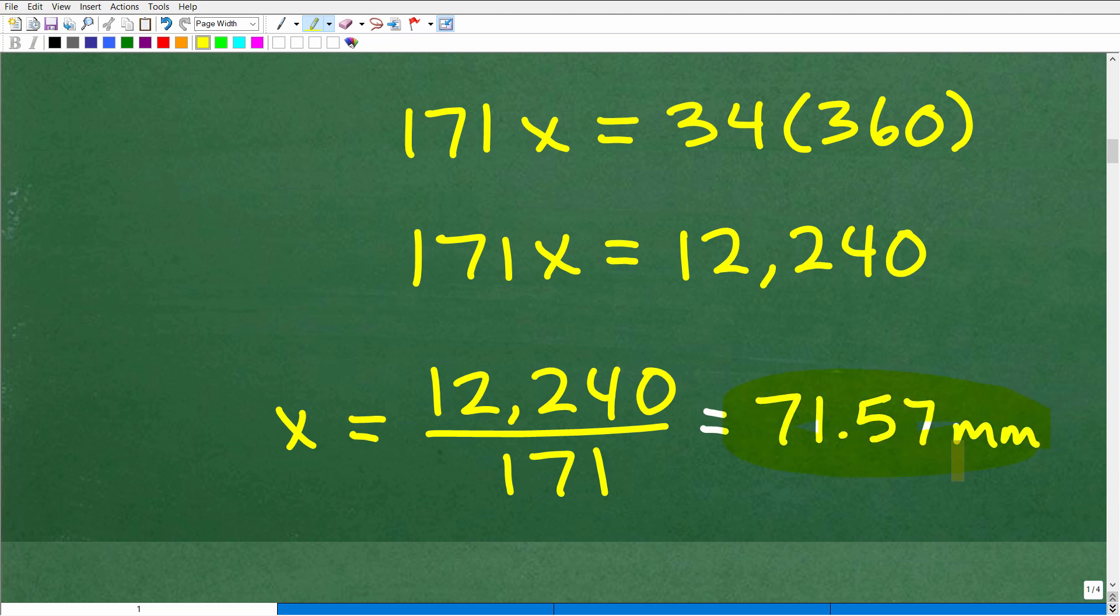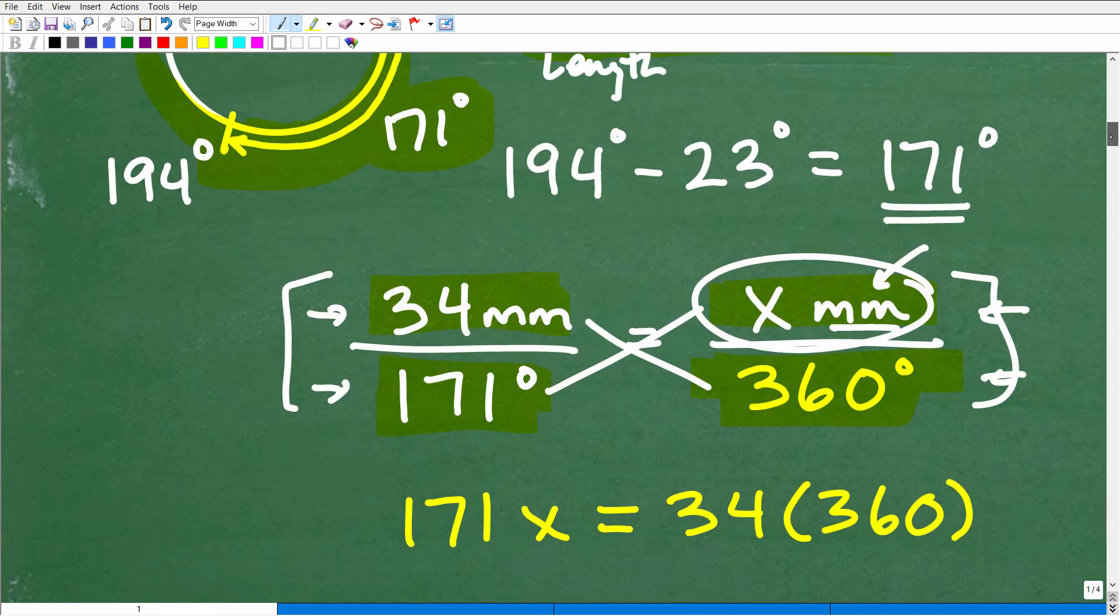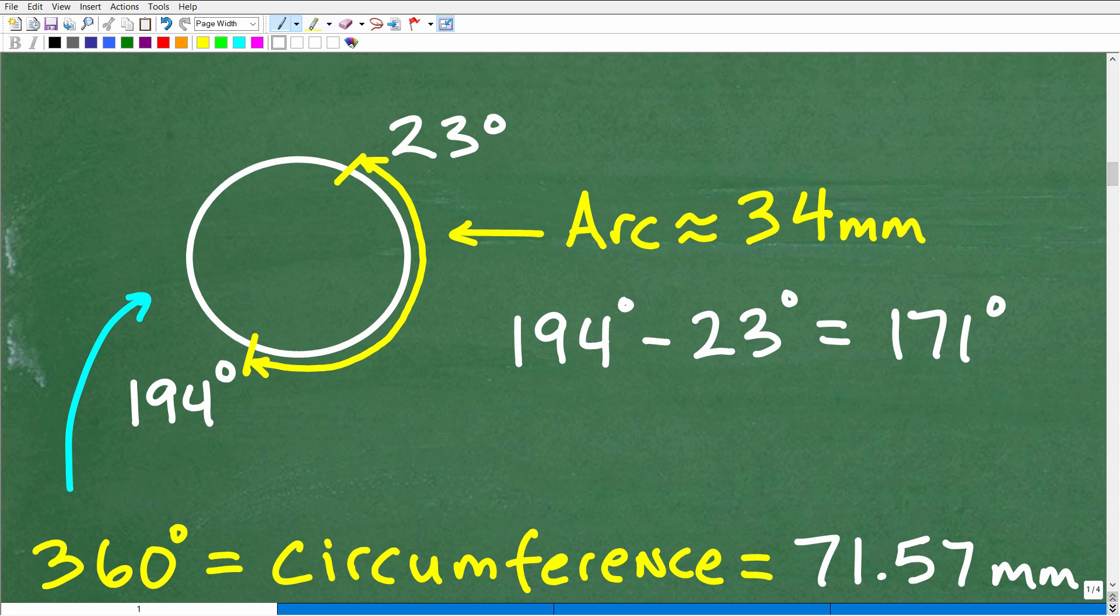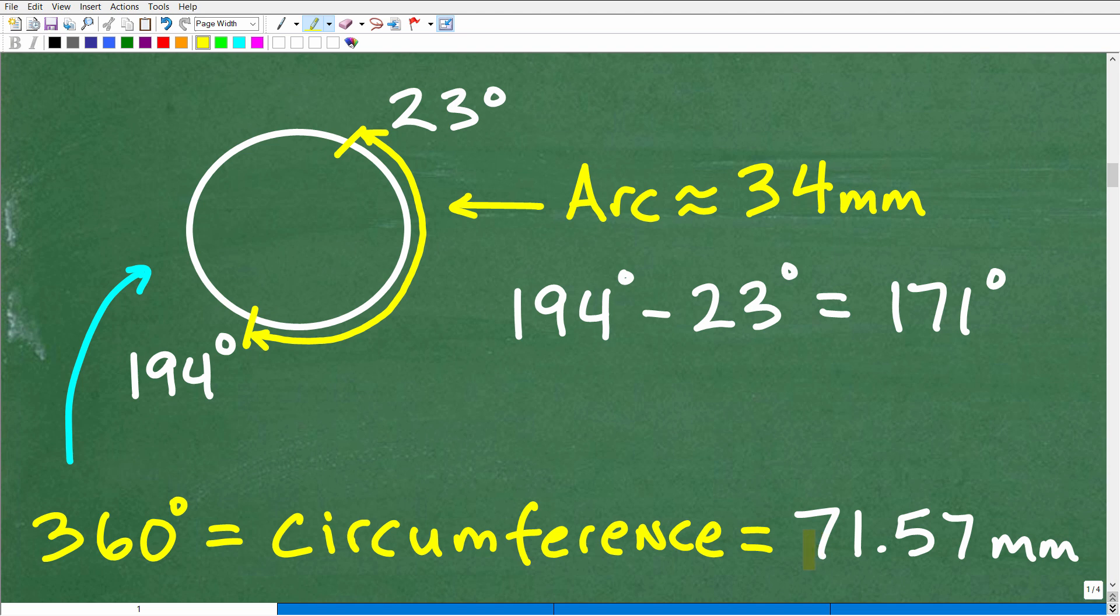But what does that mean? 71.57 what? That's millimeters, because that's what we were solving for. The entire length around the circle, 360 degrees around, is in fact approximately 71.57 millimeters. 360 degrees is one lap around the circle, and by definition that is the circumference. So now we know the circumference of this circle. I told you a few minutes ago that if we knew the circumference, we can figure out the radius because we need the radius to figure out the area. Let's take this to the next step.